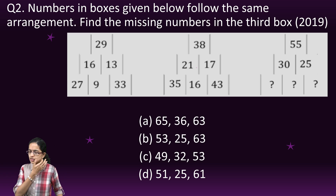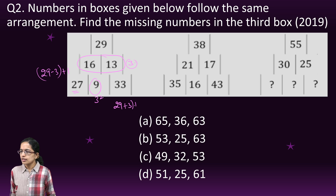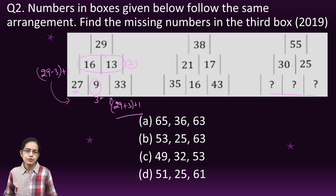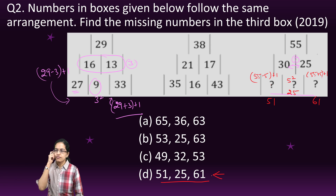The next question is interesting. First, find the difference between the two numbers — in this case the difference is 3. The middle value is the square of the difference. The left value is 29 minus 3 plus 1, and the right value is 29 plus 3 plus 1. For the next set, the difference is 5, so the middle value is 5² = 25, the left is 55 minus 5 plus 1 = 51, and the right is 55 plus 5 plus 1 = 61. So 51, 25, and 61 is the right option — an interesting question asked in 2019.